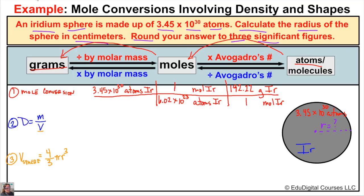Atoms of iridium in the numerator and denominator cancel. Moles of iridium in the numerator and denominator cancel, leaving us with grams of iridium. Working left to right — if a number other than one is in the denominator we divide, if it's in the numerator we multiply. So we take 3.45 times 10 to the 30th, divide by 6.02 times 10 to the 23rd, then multiply by 192.22, and we end up with 1.10 times 10 to the 9th grams of iridium.